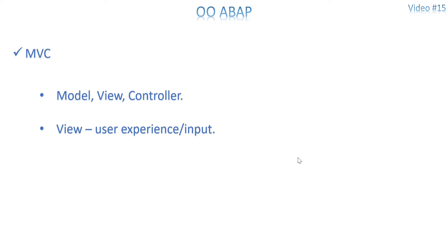The Model is going to be the data manipulation layer — the one that interacts and communicates with your database table or database system. The Model is the only place that goes and gets the data. It's a two-way communication between the Model and the database: it sends a request, gets the data back, and passes it to the next level.